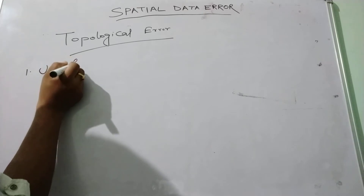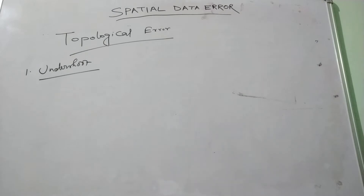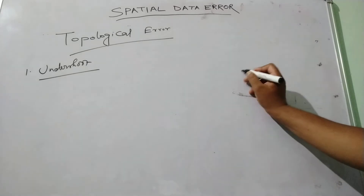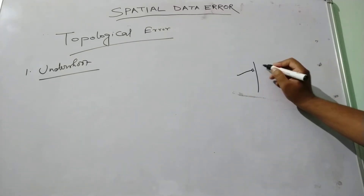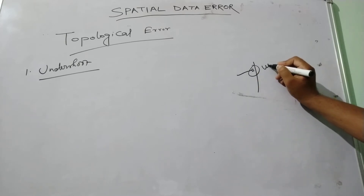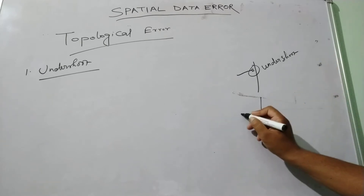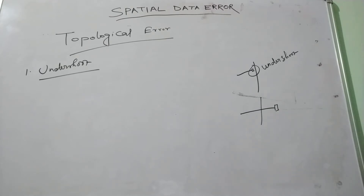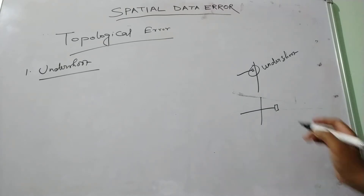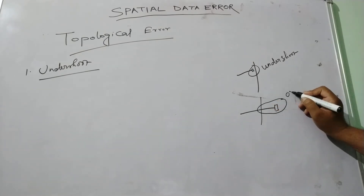Undershoot: at the time of digitizing, when there is a gap between two arcs, this is called undershoot. During our digitizing, there is a line that is overextended — this is known as overshoot.